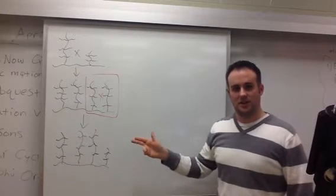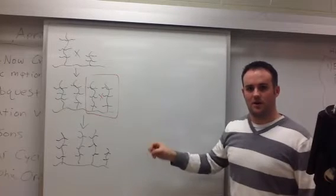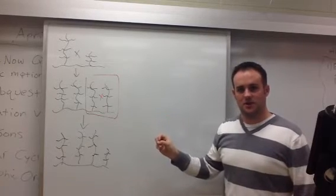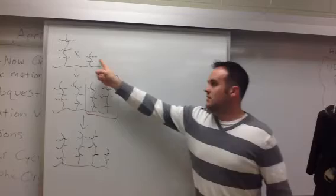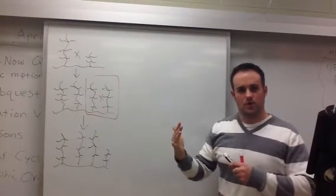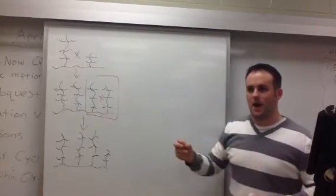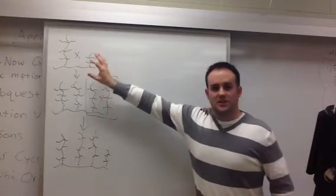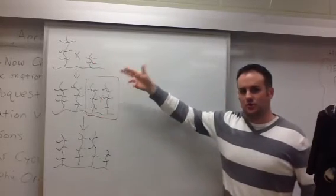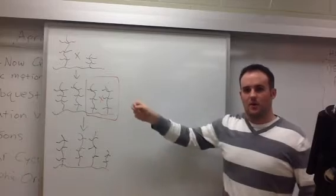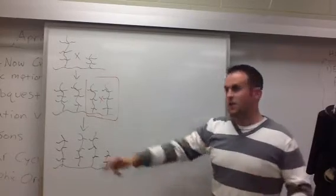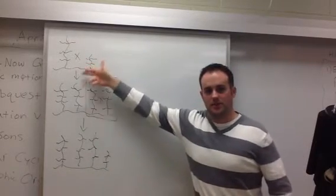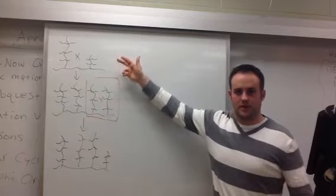We call these alleles. Alleles are variants of the same gene. In other words, the gene for tall, how tall or short a plant will grow, it is the same gene, controlled by the same genetics. However, a different variation on it. You can have tall plants or short plants.